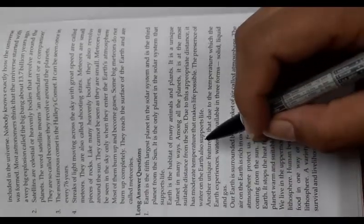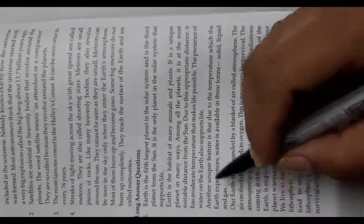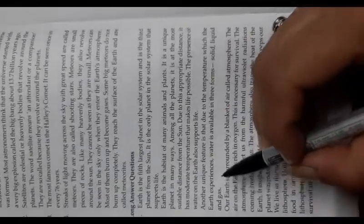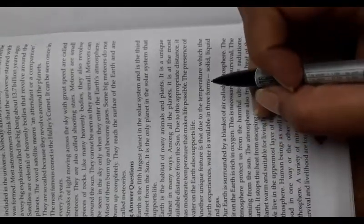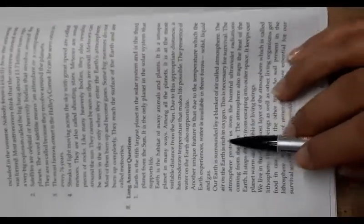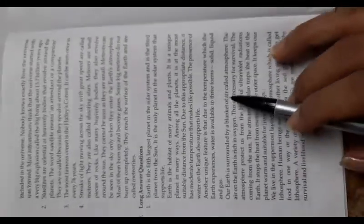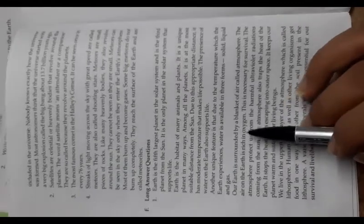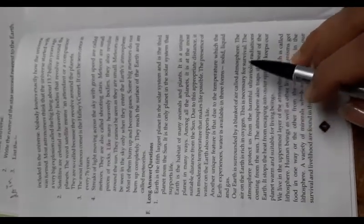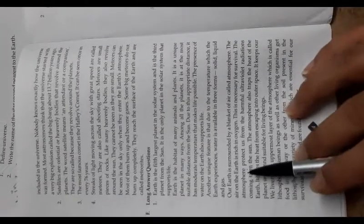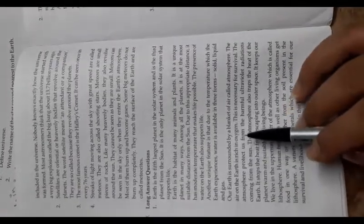Due to this appropriate distance, Earth has a moderate temperature that makes life possible. The presence of water on Earth also supports life. Another unique feature is that due to the temperature Earth experiences, water is available in three forms: solid, liquid, and gas. Our Earth is surrounded by a blanket of air called atmosphere.